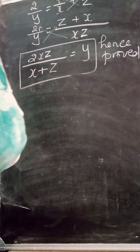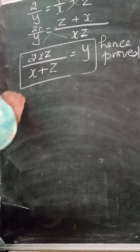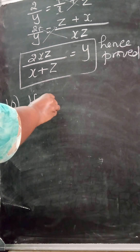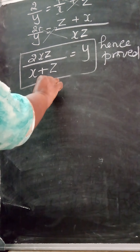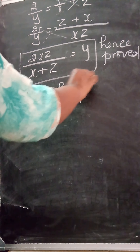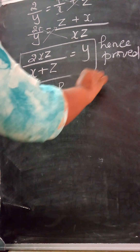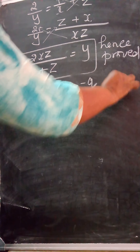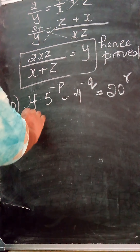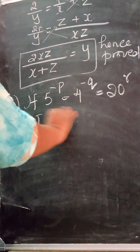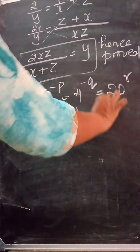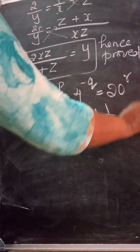Now the tenth sum: if 5 raised to the power of minus p is equal to 4 raised to the power of minus q, equal to 20 raised to the power of r, show that 1/p + 1/q + 1/r is equal to 0.